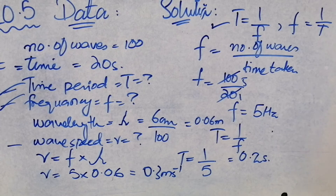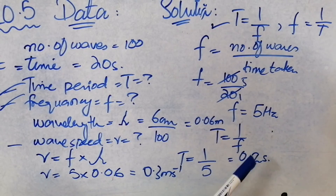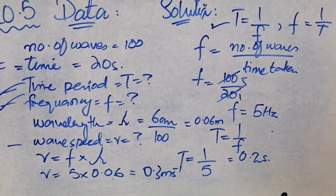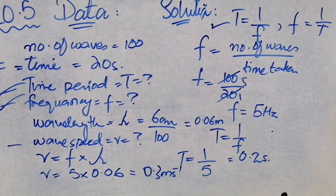For three different unknowns we had different formulas but they were very easy. If you have frequency you can find time period, and when you have frequency and lambda you can find speed. This was problem 10.5, now we will do 10.6. Please subscribe to my channel, like my videos, share and comment. Thank you for watching. Allah Hafiz.